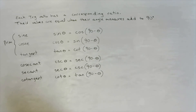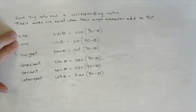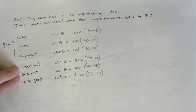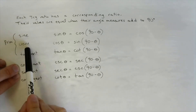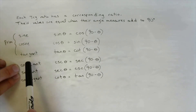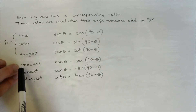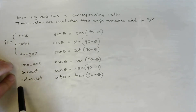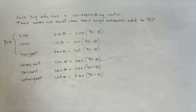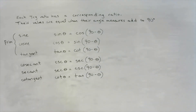Sine and cosine are a team, tangent and cotangent are a team, cosecant and secant are a team. One way to remember: sine has cosine in front of it with 'co'; tangent has cotangent; secant has cosecant — each pair has a 'co' prefix on one of them. These are the corresponding ratio pairs.